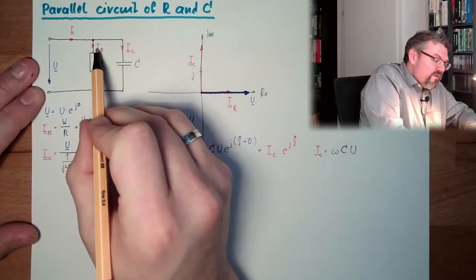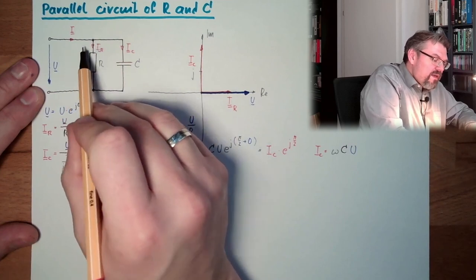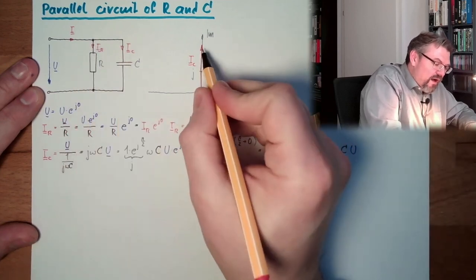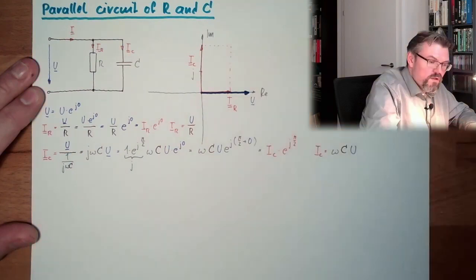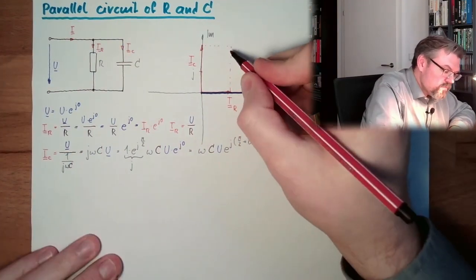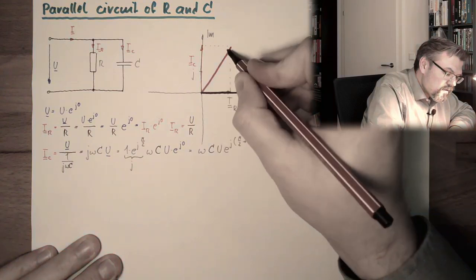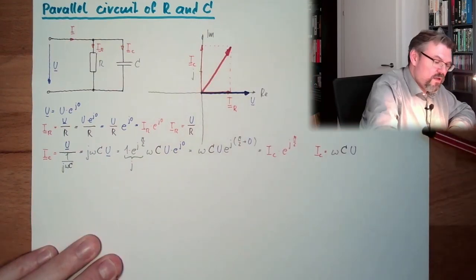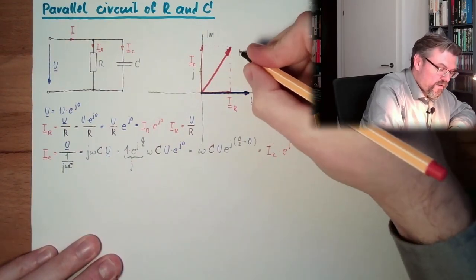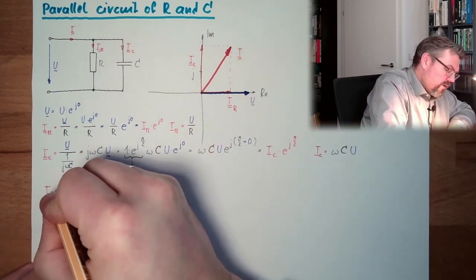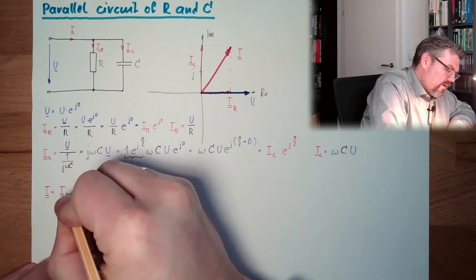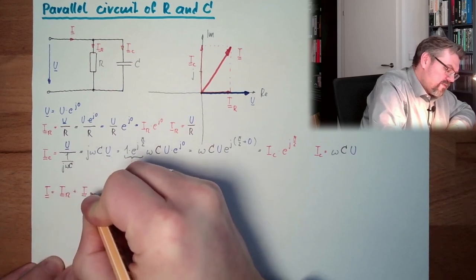Now let's have a look at this node here. I equals IC plus IR. So let's summarize those two. Here we have our I, which is looking like that. Here we have our I, because our I equals IR plus IC.